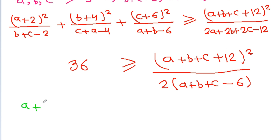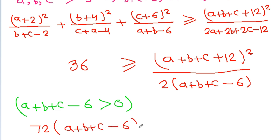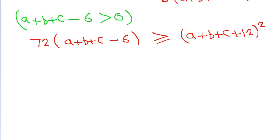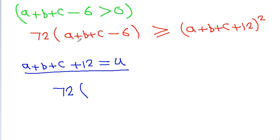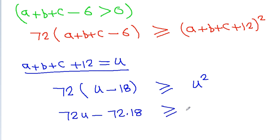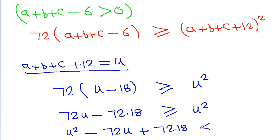So 36 ≥ (a+b+c+12)² / (2(a+b+c−6)). This gives us 72(a+b+c−6) ≥ (a+b+c+12)². If we let u = a+b+c+12, then we get u² − 72u + 72×18 ≤ 0, or u² − 72u − 72×18 ≤ 0.